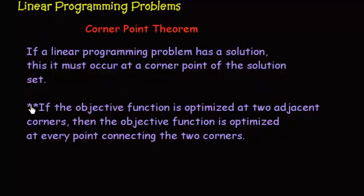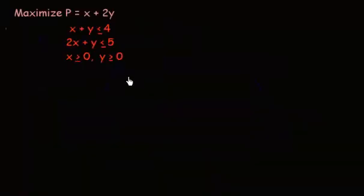Now, there's a little bit of a change here. If the objective function is optimized at two adjacent corners, then the objective function is optimized at every point connecting the two corners. So, not just at a corner, the maximum or minimum, but every point that connects those two corners. Now, this isn't going to happen very often, but it's something that's stated in the theorem that I wanted to show you.